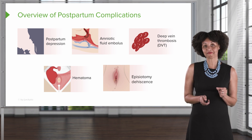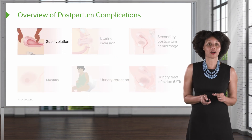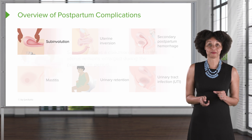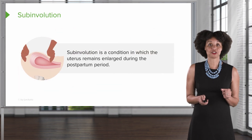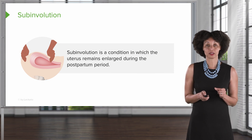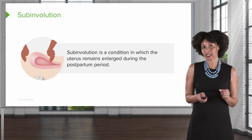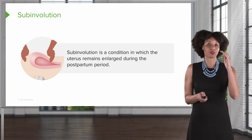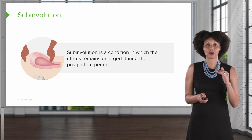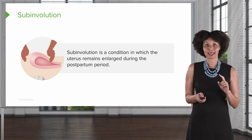Ready or not, here we go. The first complication we'll talk about is subinvolution — a condition in which the uterus remains enlarged during the postpartum period. If you'll remember from our postpartum assessment lecture, the uterus goes down about a finger's breadth every day. In subinvolution, this doesn't happen.